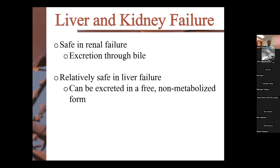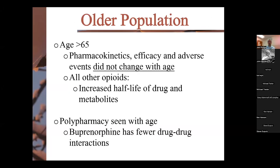Because buprenorphine can be excreted through bile unmetabolized, it's safe in renal failure and relatively safe in liver failure for the same reason. So if somebody has bad liver or bad kidney function, consider this medication — you don't have to change the doses. In the older population — patients over 65 — pharmacokinetics did not actually change, so you may not need to make much dose adjustment. Compared to other opioids where we typically see increased half-life in older patients, we're not seeing that here. Fewer drug-drug interactions also make this a safer choice in the setting of polypharmacy.